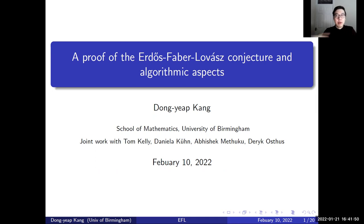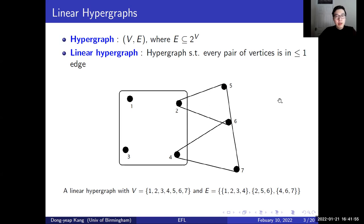Let us begin with some basic notations. A hypergraph is a tuple of a vertex set V and an edge set E, where E is a collection of subsets of vertices. A linear hypergraph is a hypergraph where every pair of vertices lies in at most one edge.